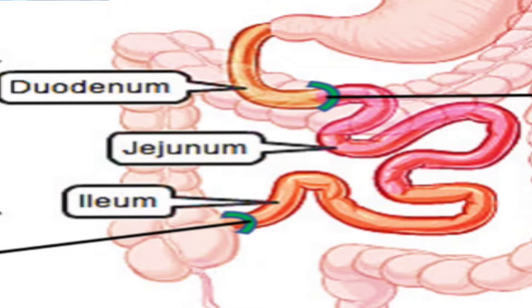Before holding, you must know the jejunal site and the ileal site — to identify the orifice near the jejunum and the orifice near the terminal end of the ileum — and other anatomical features to understand which is the jejunal site and which is the ileal site. Then you can hold the specimen in anatomical position.